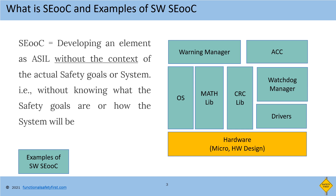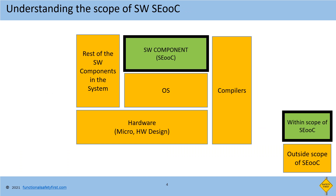Also, a software SEooC can be just one software component or it can be several software components such as a BSW stack. Now that we know what a software SEooC is, let us understand what is the external world of a software SEooC. The hardware in which the software SEooC runs is obviously outside its scope — this includes the microcontroller in which the software will run and other aspects of the hardware architecture that can influence the SEooC. Second is the OS. Third, the rest of the software architecture or software components that use the software SEooC's APIs or services are outside its scope. Number four, the compiler that is chosen to compile the SEooC.